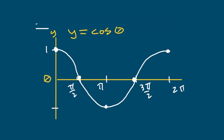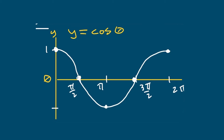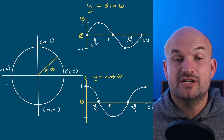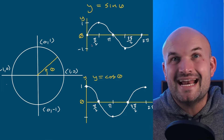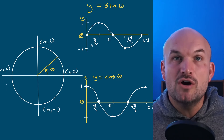Now let's look at the cosine graph using y equals cosine of theta, where theta is my input and y is my output. The output here is the x-coordinate of my point on the unit circle. At angle zero, x-coordinate is one — dot at one. At pi halves, x-coordinate is zero. At pi, x-coordinate is negative one. At three-pi-over-two, x-coordinate is zero. At two pi, x-coordinate is one again. Connecting the dots gives a graph very similar to sine, just shifted. The pattern of cosine continues as you go around the circle.